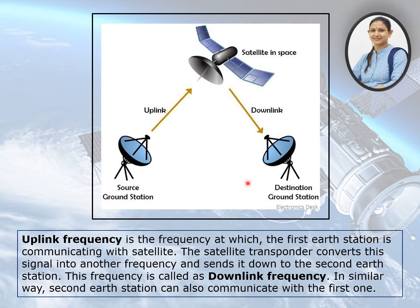Here, in this pictorial view of satellite communication, we can see two earth stations — one which is sending the uplink frequency. The frequency with which the source station sends a signal into space is called uplink frequency.